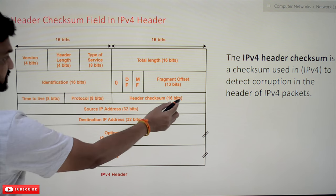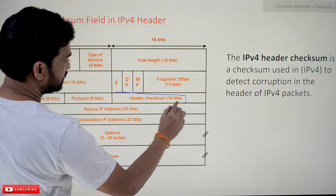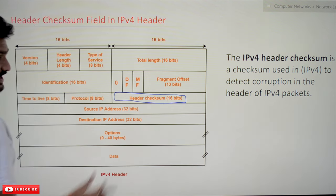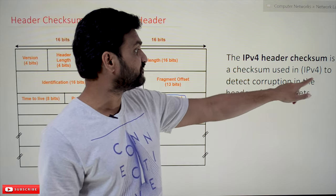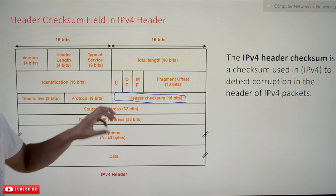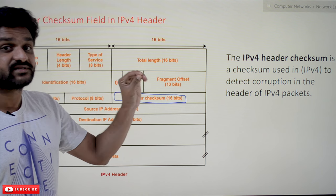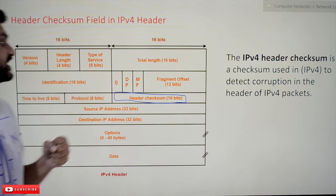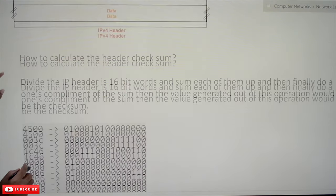Now, coming to this class — header checksum is the last field of the third row of the IPv4 header. It is a 16-bit header field. The IPv4 header checksum is the checksum used in IPv4 to detect corruption in the header of IPv4 packets. If there is any corruption in the header of an IPv4 packet, that corruption can be detected by using the header checksum.